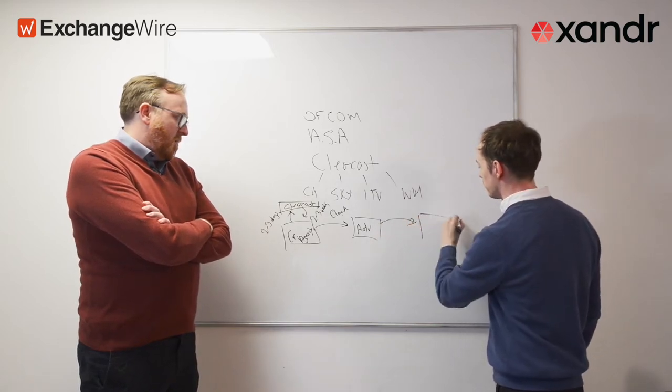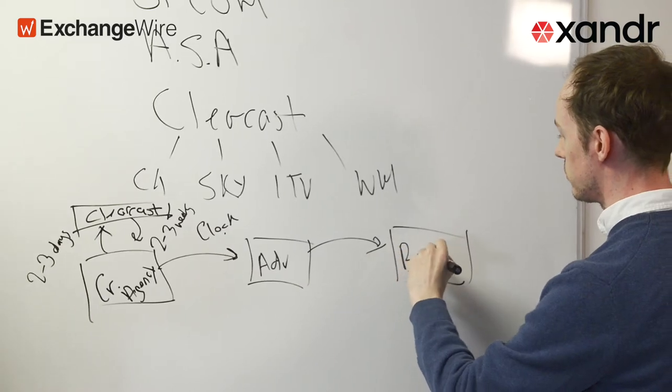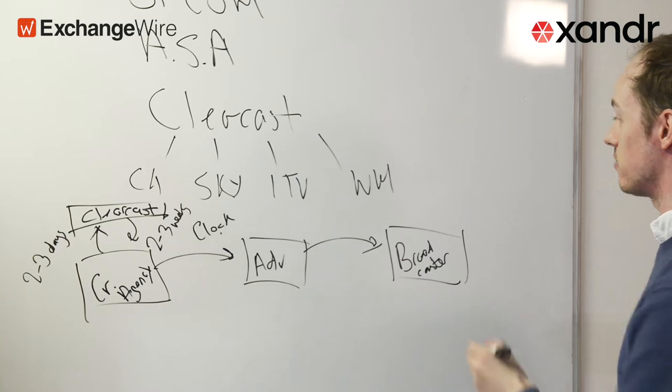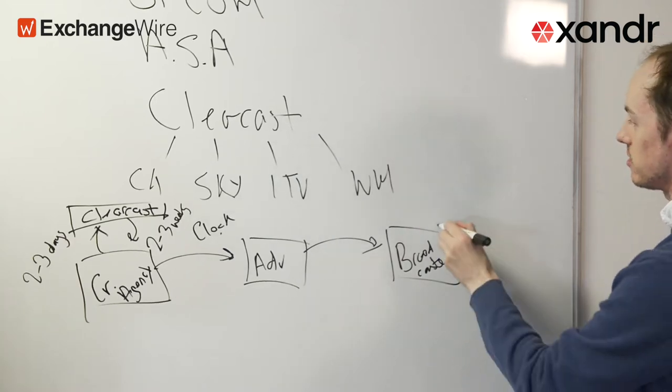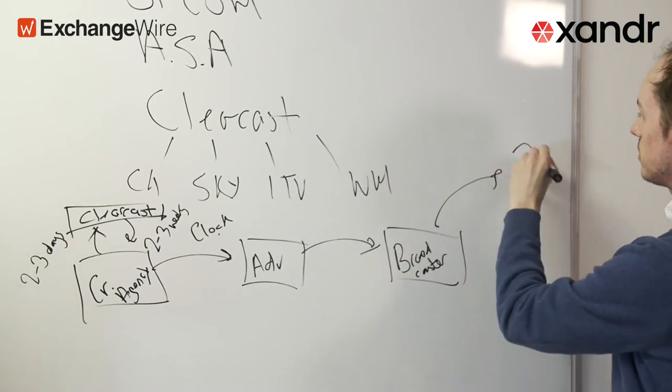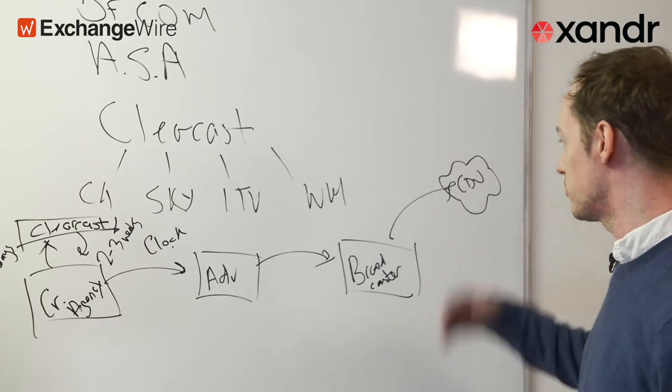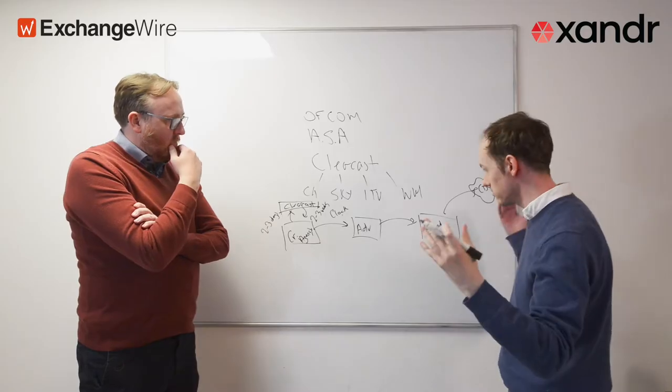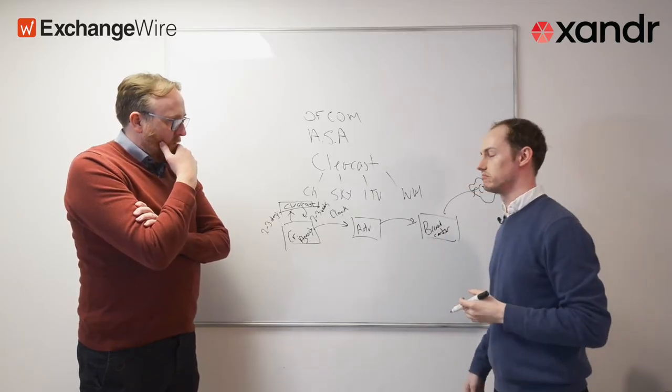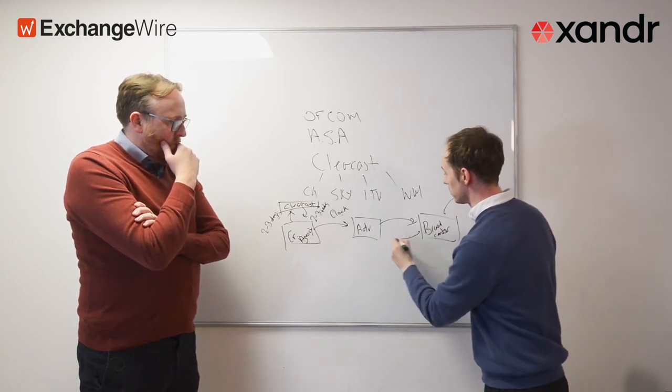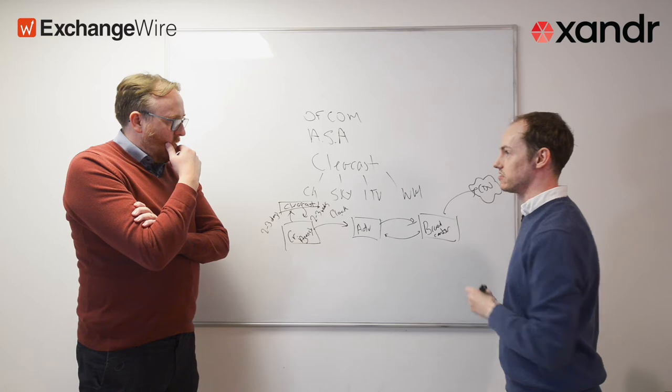The advertiser will then pass that creative over to the broadcaster. If all's good with that creative, the broadcaster will take it and upload it into their CDN, into the cloud, so it's ready to serve. That's going to be transcoded into lots of different formats so it serves nicely on set-top boxes, etc.